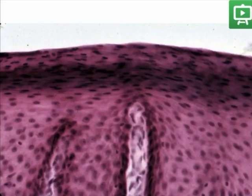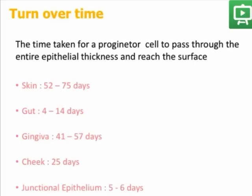Here is a section of parakeratinized or partially keratinized epithelium. The time taken for a progenitor or stem cell to pass through the entire epithelial thickness and reach the uppermost surface is called the turnover time. This is highest for the skin, and we have a very low turnover time of five to six days for the junctional epithelium.